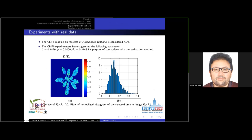The chlorophyll fluorescence imaging on rosettes of Arabidopsis thaliana is considered here. The image of a PCI index is made available to conduct the parameter estimation approach. To build variational inference with the mean field approximation, we selected an area located in the length of leaves as illustrated in figure A. The normalized histogram of the selected area is represented in figure B. The chlorophyll fluorescence experimenters have suggested the following parameters: beta equal 0.1429, rho equal 6, and delta Y equal 0.2143 for purpose of comparison with our estimation method.